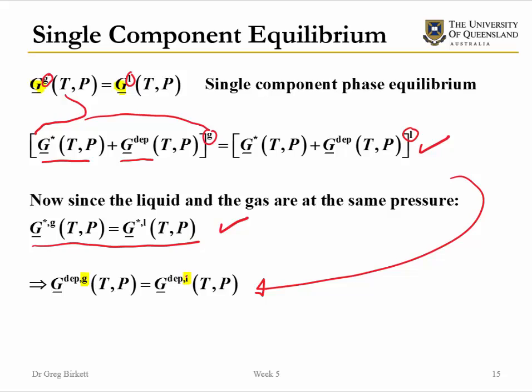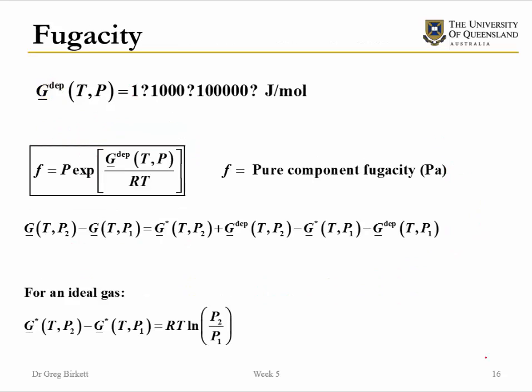This is a more useful relationship for us to be able to use with equations of state, as we will see in the next couple of slides. An issue with the departure Gibbs free energy is that it is not completely apparent what the magnitude of this should be — whether it should be one, a thousand, or a million joules per mole.